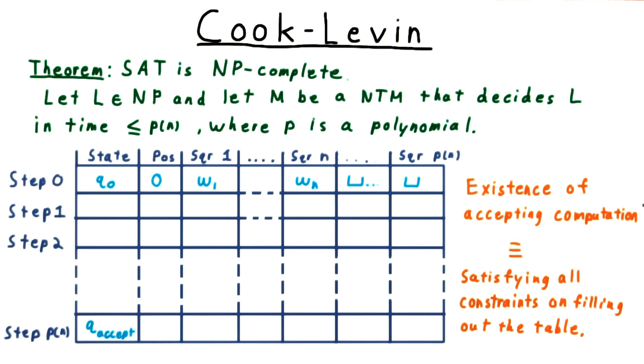The Cook-Levin theorem, then, consists of arguing that the existence of an accepting computation is equivalent to being able to satisfy a CNF formula that captures all the rules for filling out this table.